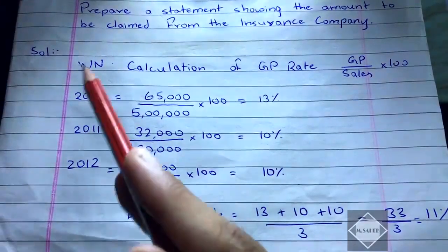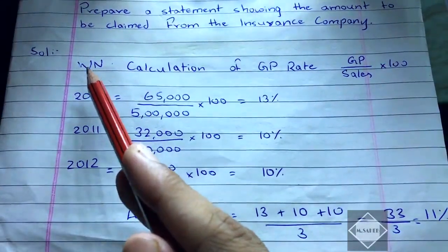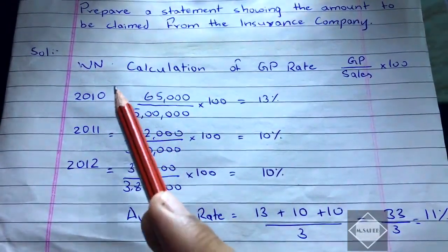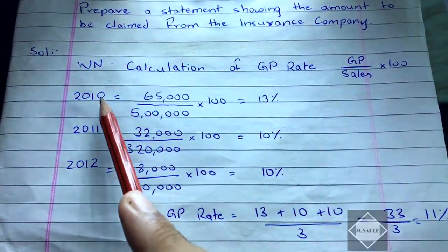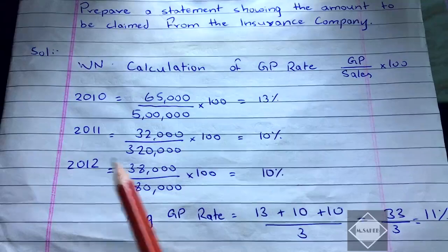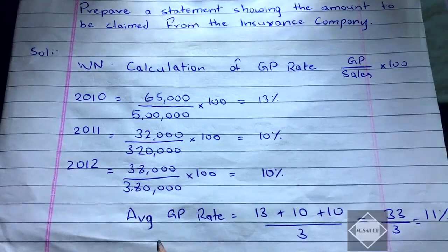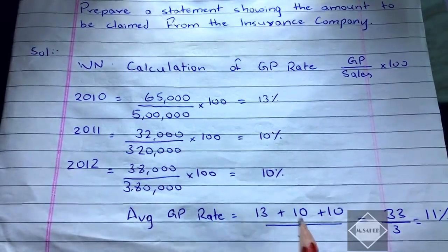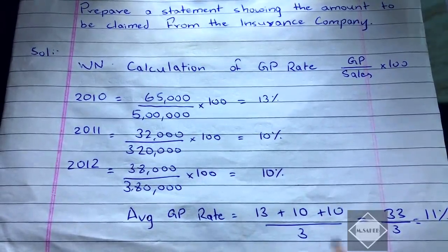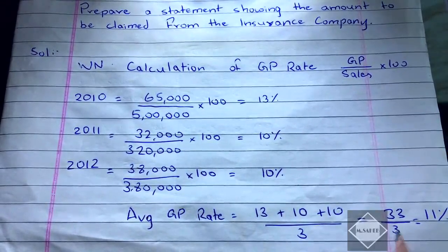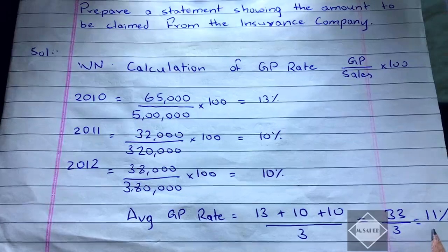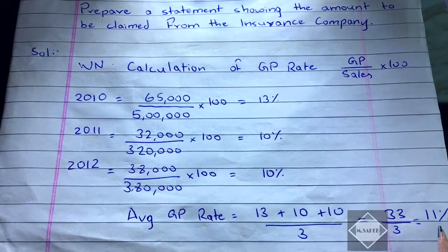To recap: we prepared a working note to calculate the GP rates for the three previous years. The average GP rate was (13 + 10 + 10) ÷ 3 = 33 ÷ 3 = 11%.